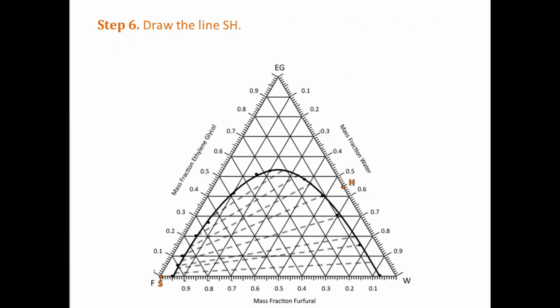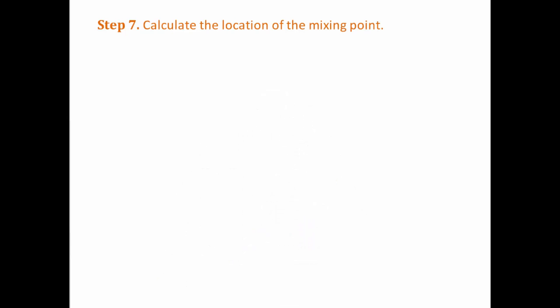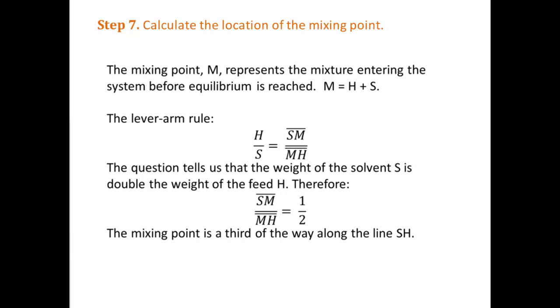Draw a line from S to H. This is needed to find the mixing point. Using the lever arm rule, it is possible to find the composition of M and plot it on the diagram. The mixing point M represents the composition you get out of mixing the feed and the solvent.